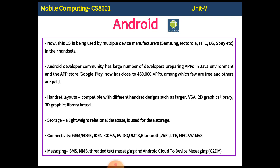So far we have discussed the basics of mobile operating system, operating system structure, basic concepts, special constraints and requirements, and commercial mobile operating systems — Windows Phone, Palm OS, iOS, and Android. These are one part of unit 5, and the remaining topics will be continued in the next video session. Thank you.